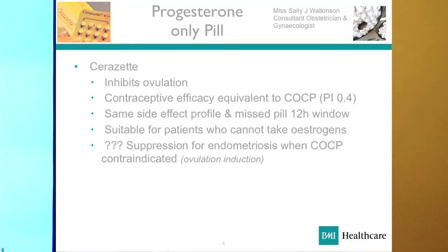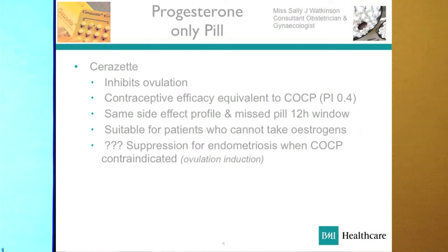Another big group is the progesterone-only pill. I've picked out Cerazette, which I prescribe fairly frequently as a gynaecologist. Unlike other progesterone-only pills, it inhibits ovulation, and its contraceptive efficacy is equivalent to the combined pill with a Pearl index of 0.4 versus 0.3. It has the same 12-hour missed pill window as the combined pill. There's a reduced side effect profile because there's only one hormone. Its mainstay of use is for patients who can't take oestrogen — those with focal migraine, or over-35-year-old high BMI diabetic smokers, for example.